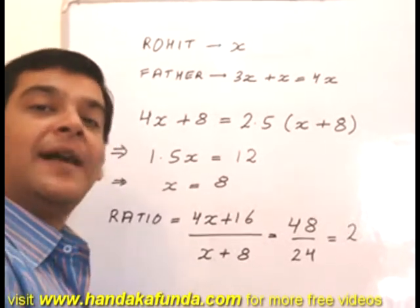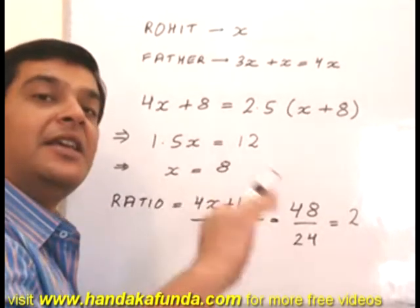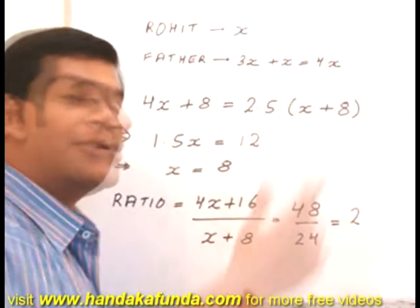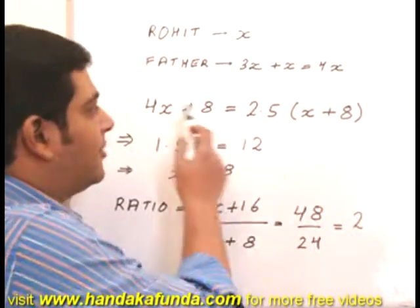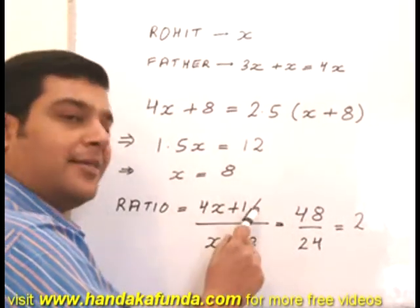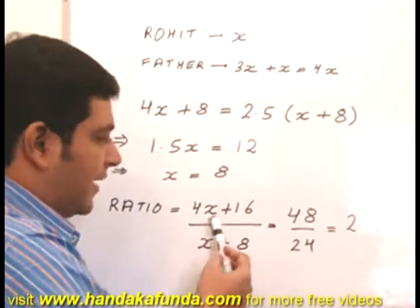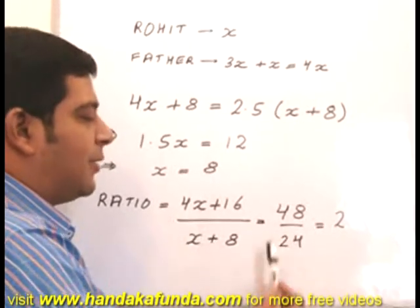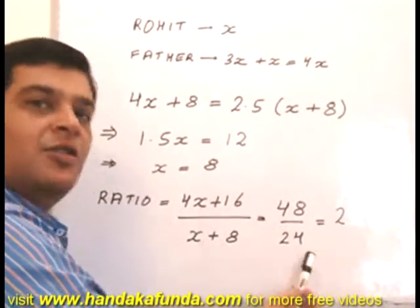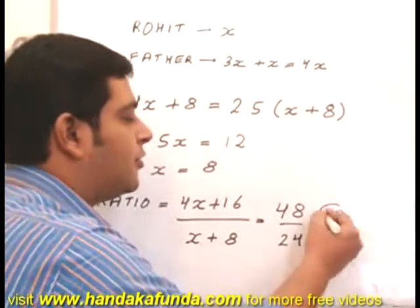My question is to find out the ratio of the father's age to son's age even 8 years further. So that is an extra 8 years over these values. So father's age then will be 4X plus 16, and Rohit's age will be X plus 8. So father's age will be 48, Rohit will be 24, and the required ratio is 2.